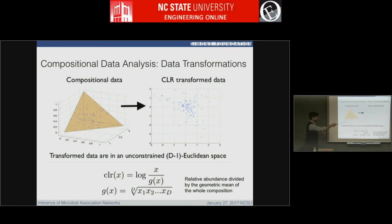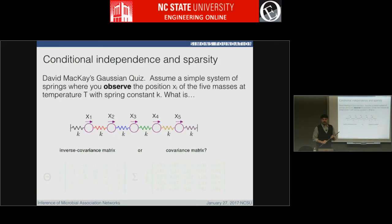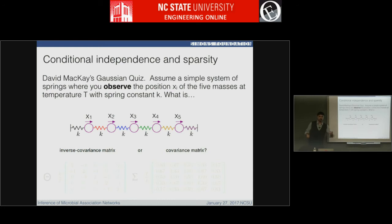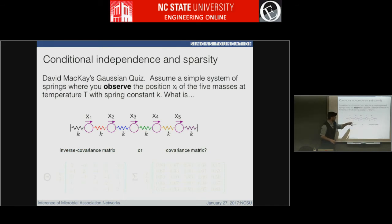Now that we have the data transformed, how do we define association among things? I want to give you David MacKay's Gaussian quiz. A classical thing would be to transform the data and then look at correlations. But what we actually want to get at is something like direct interactions, direct associations. One trick we can use in statistics is the concept of conditional independence. Imagine a system of springs where you have balls, a spring constant K, and all you observe is the jiggling balls. What you would like to infer are the tethers — the springs in between. You have access to the variation of X_1 to X_5, and the question is how the covariance matrix of the entire system looks, or your correlation matrix, and how the inverse looks.